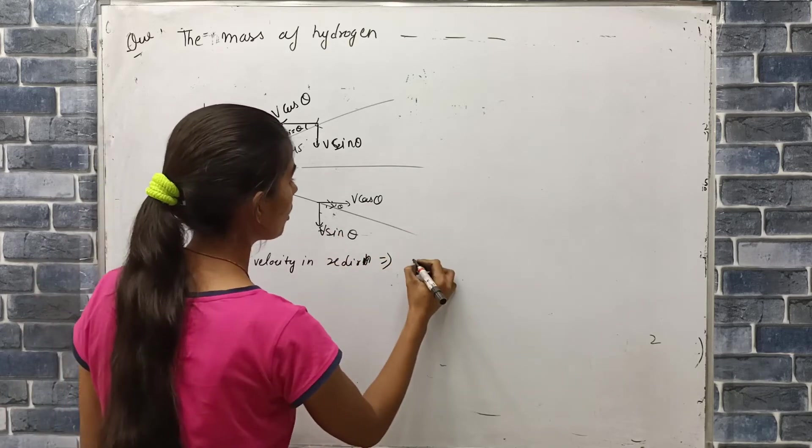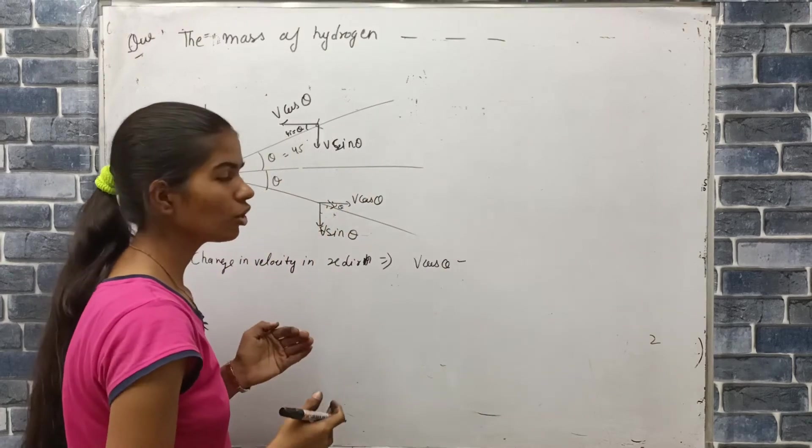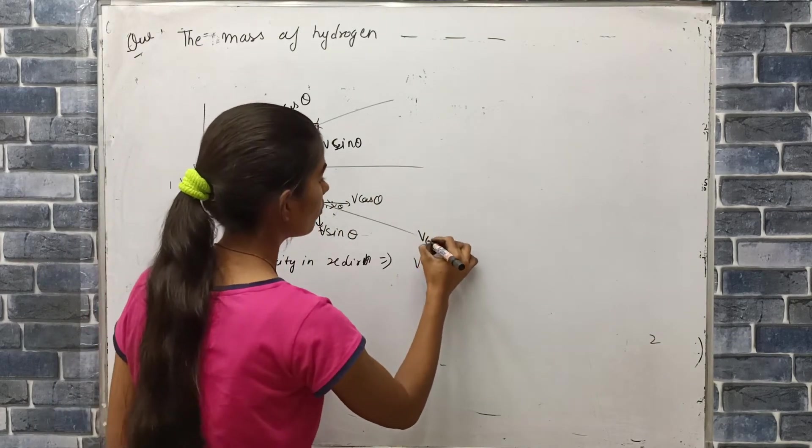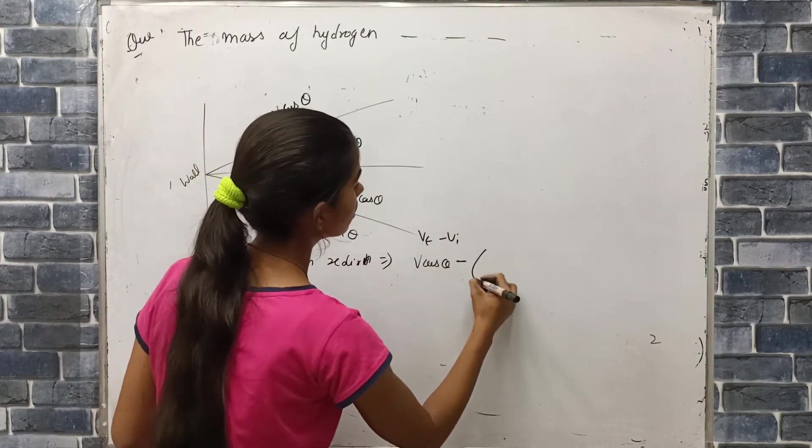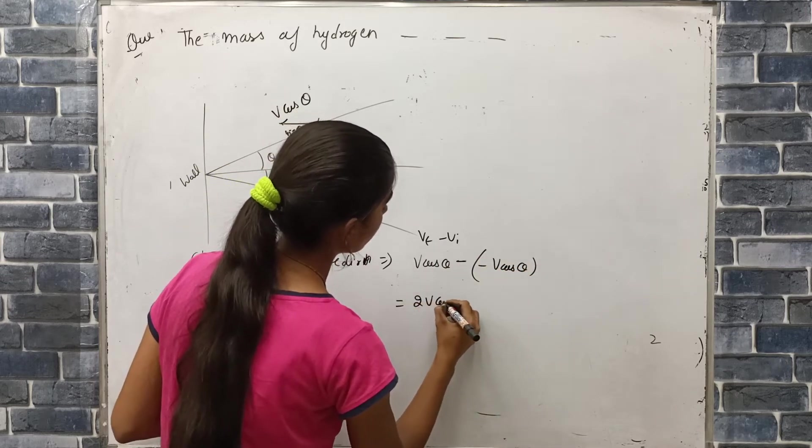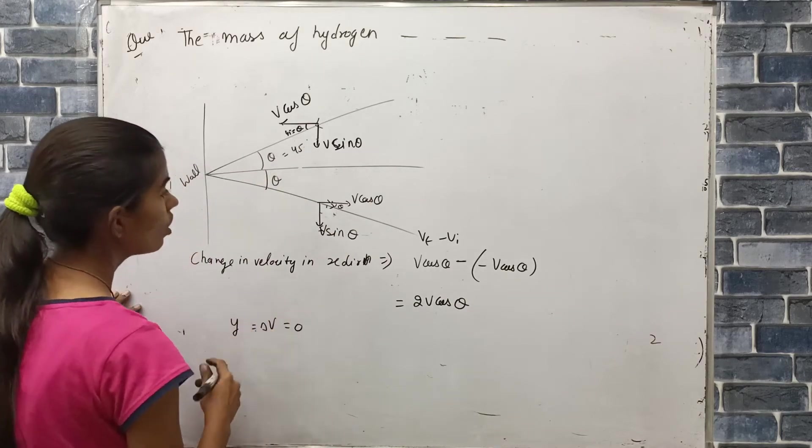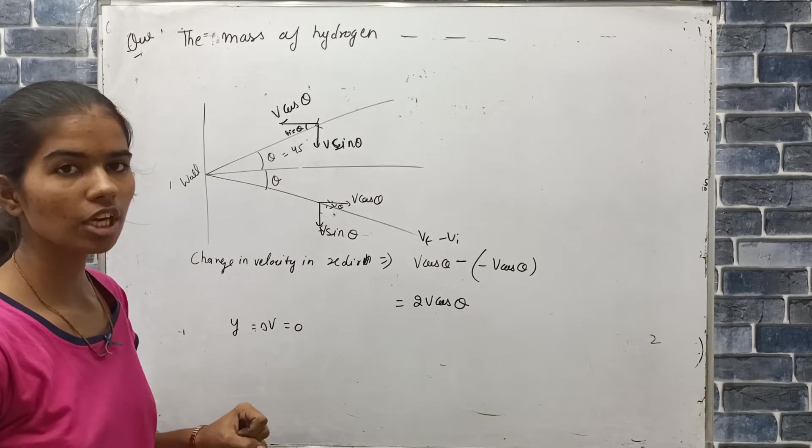If we change the velocity, V minus V minus, so change in velocity in x-direction 2V cos theta will be. And in y-direction, what is change in velocity? Zero.